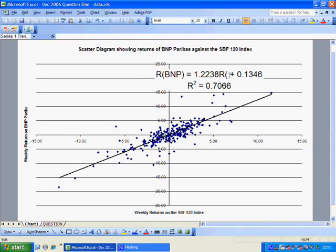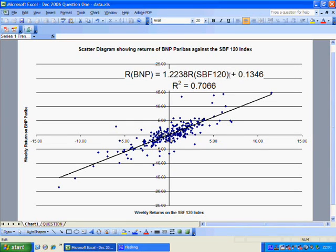You can see this is an aggressive stock. If the market went up by 10%, then the stock would go up by 12.24%. If the market fell by 10%, this stock would fall by 12.24%, as predicted by the single index model.